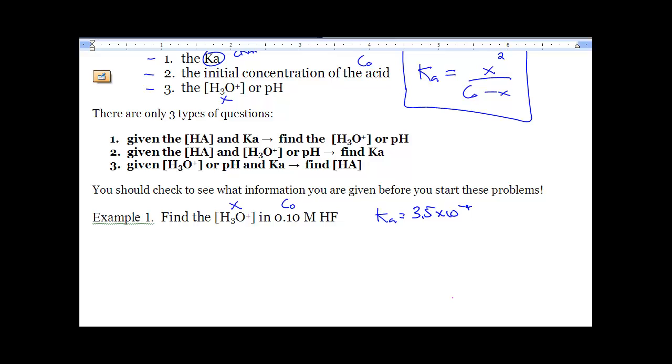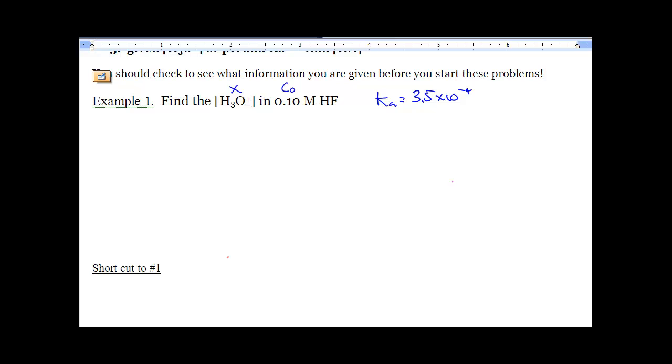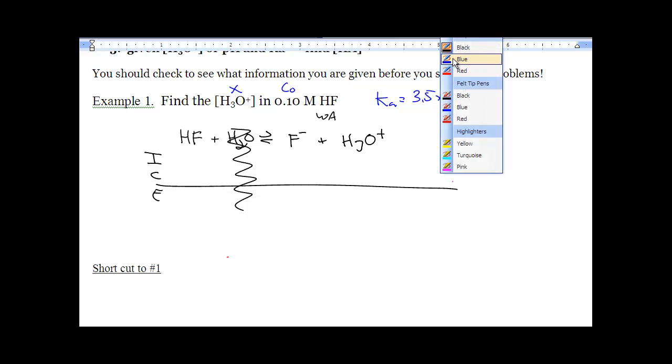So we know the Ka, we know the initial concentration, now we're solving for X. So let's plug everything into the ICE table and you'll see exactly where we're going with this. To start off, HF is a weak acid. Identify that it's not a strong acid like they've been in every single question to this point. So we're going to write out the weak acid ionization: HF plus H2O double arrow goes to F minus and H3O+.